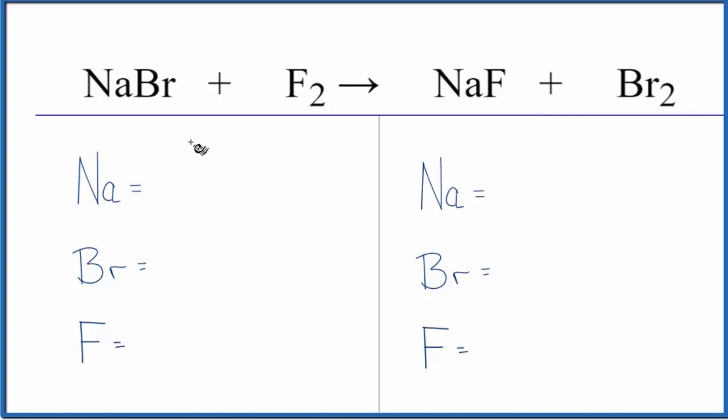Let's count the atoms up on each side and then balance the equation. One sodium, one bromine, two fluorine atoms. On the product side, one sodium, two bromines here, and then one fluorine.